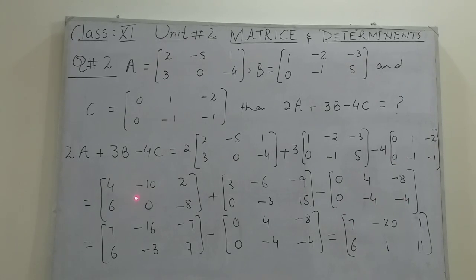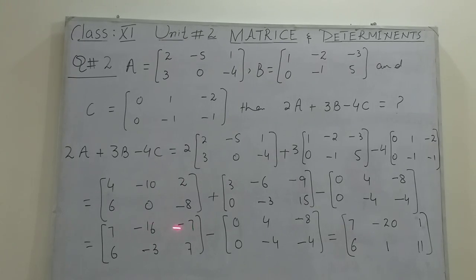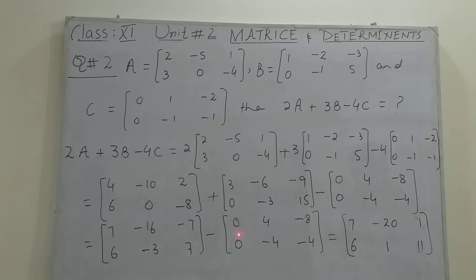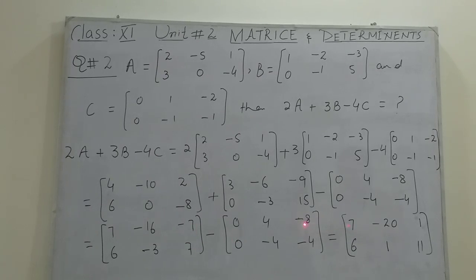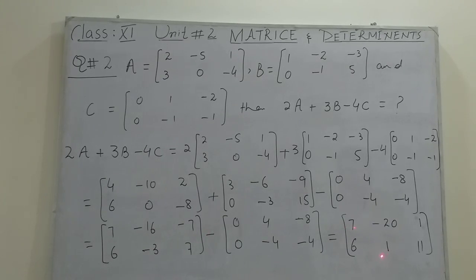Adding the first two matrices: four plus three equals seven; minus ten plus minus six equals minus sixteen; minus six minus six equals minus sixteen; two minus nine equals minus seven; six plus zero equals six; zero minus three equals minus three; minus eight plus fifteen equals seven. Now subtracting the last matrix: seven minus zero equals seven; minus sixteen minus four equals minus twenty; minus seven minus minus eight gives one; six minus zero equals six; minus three minus minus four gives one; seven minus minus four gives eleven. This is the required answer for question two.